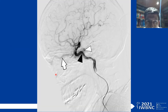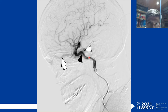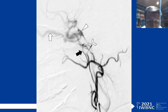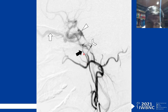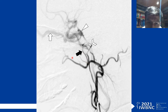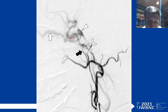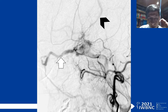Considering the patient's symptoms, we suspected a cavernous sinus fistula. On external carotid artery injection, we could see the relationship between the middle meningeal artery, indicated by the black arrow, and its relation with the ascending pharyngeal artery, and the connection between the cavernous sinus and the indirect carotid cavernous fistula.